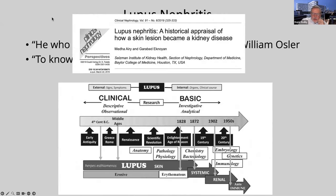I'll put the link in here — it's a really nice review about the history of lupus. It goes back to the 4th century BC when this was starting to be described, through the scientific revolution, early physiology, and finally to immunology, which is really what this talk is about today, starting to define lupus as its own disease.